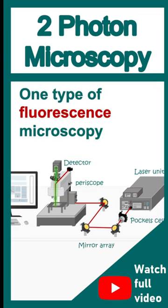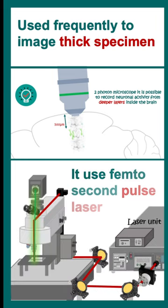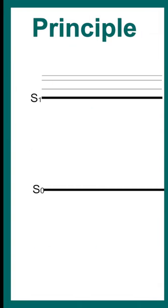Two photon microscopy is one type of fluorescence microscopy which is very useful to image thick specimens. Two photon microscopy uses femtosecond pulse laser and this is generally in infrared range.